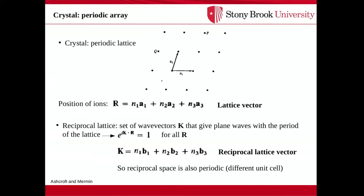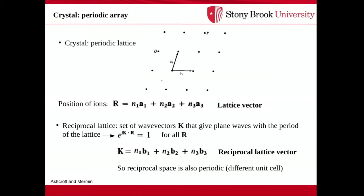In solid state, we study crystals, which are a periodic array or lattice of atoms. The black dots represent the atoms or nuclei, with electrons around them. Periodic means we have a unit cell — think of this parallelogram — and we repeat it all around space to cover the whole space. Mathematically, it means any point P or Q can be written as an integer linear combination of basis vectors A1, A2, and in three dimensions A3. So any lattice site with position R can be written as an integer times A1, an integer times A2, and an integer times A3. These are called lattice vectors.